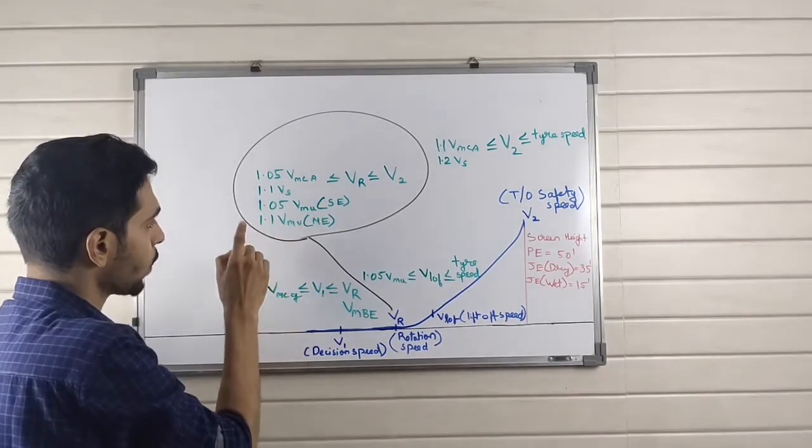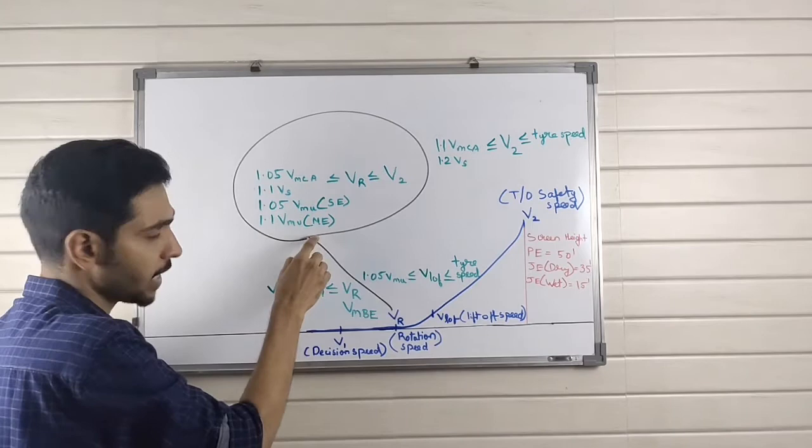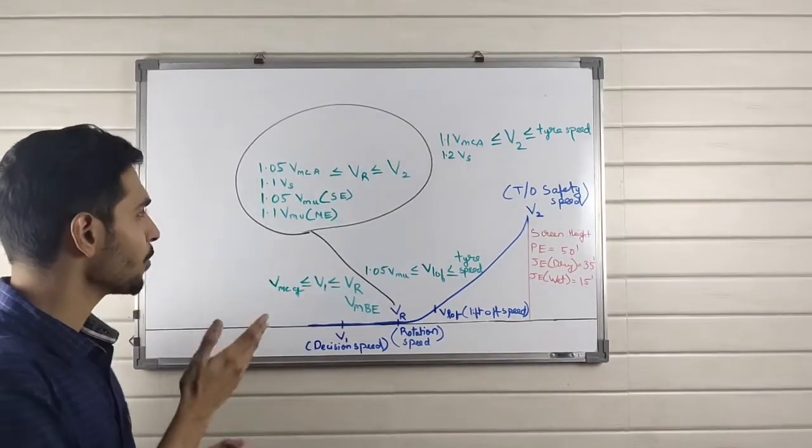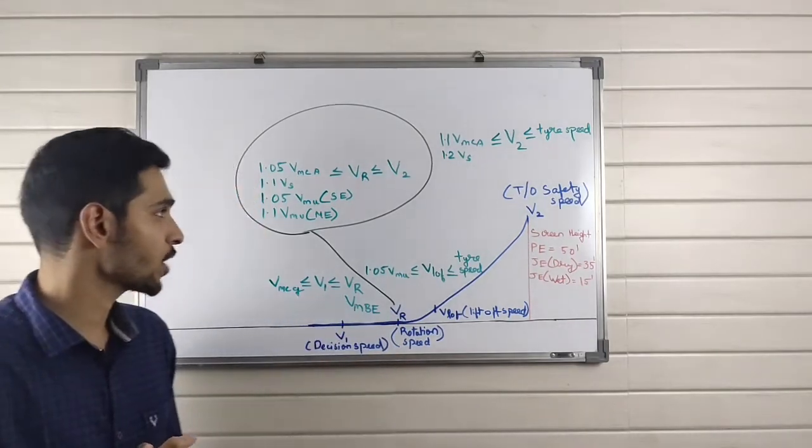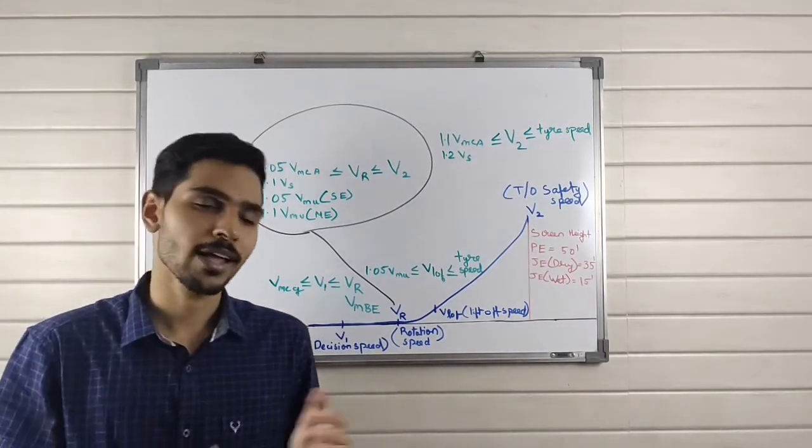VMU is the lowest demonstrated takeoff speed with both engines working. It is demonstrated by the test pilots during aircraft certification.